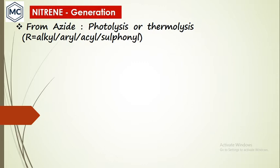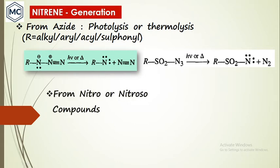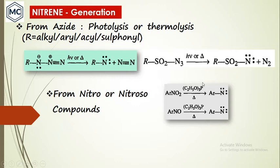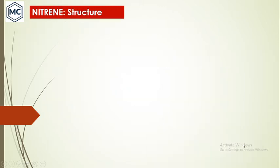On photolysis or thermolysis of azide (N₃), it gives nitrene with evolution of nitrogen gas. A sulfonyl azide similarly gives the corresponding nitrene. The second method: nitrene is also obtained from nitro or nitroso compounds — a nitro compound on thermolysis in the presence of alkoxyphosphine gives nitrene. Third, from small ring compounds, on light radiation you get aldehyde and a nitrene.